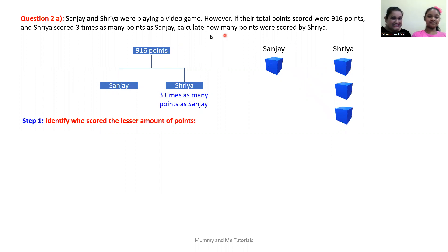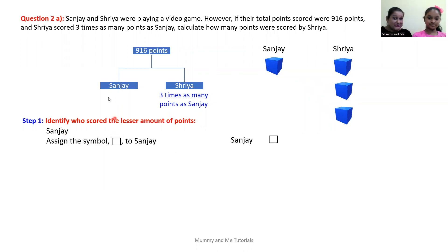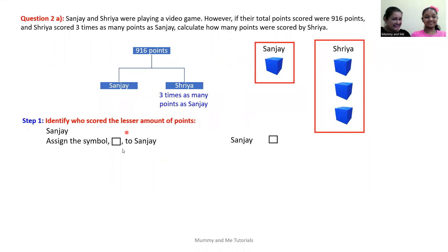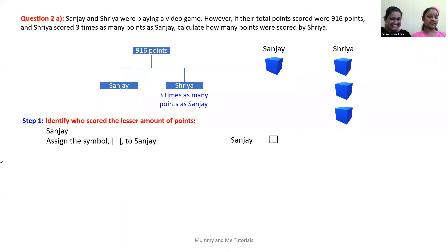So what do we do first? Our first step is to identify who scored the lesser amount of points between Sanjay and Shreya. Sanjay scored the lesser amount. Why? Because Shreya scored three times as many points as he did. So we assign a symbol — which would be our box in this case — to Sanjay. The person that scored the lesser amount of points receives the symbol. Can the symbol be anything? Yes, because we're using a box today.